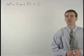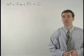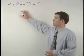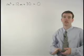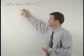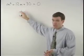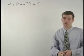To solve this equation by completing the square, we need a perfect square trinomial on the left side of the equation. Notice that the trinomial we have doesn't even factor, so we know it's not a perfect square trinomial.